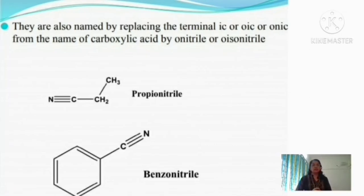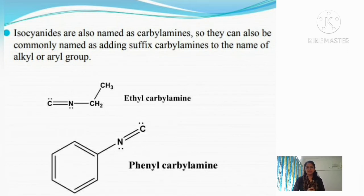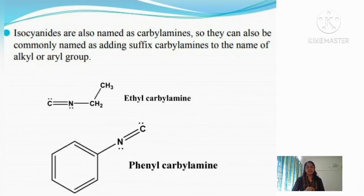If it is an isocyanide (NC), '-oic acid' is replaced by '-isonitrile.' We have already discussed that isocyanides are otherwise termed carbylamines, so we can also name them using the suffix 'carbylamine.' First name the alkyl or aryl group, then add 'carbylamine.' For example, C₂H₅NC is ethyl carbylamine, and C₆H₅NC is phenyl carbylamine.